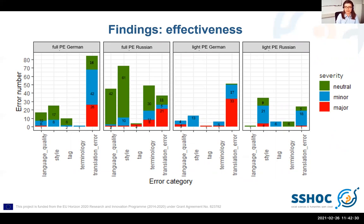Post-editors were instructed to assign severity levels for chosen error categories. Major severity means the translation completely changes the meaning and likely misleads the respondent. Minor errors may affect the respondent's comprehension. Neutral errors include those that might make the translation slightly harder to understand but do not prevent overall understanding. The most often chosen severity for error categories is neutral, followed by minor and major. German post-editors assigned translation errors most frequently, followed by style and language quality. Russian post-editors chose style as the most frequent error, followed by terminology and language quality.